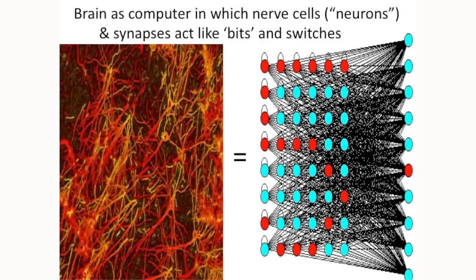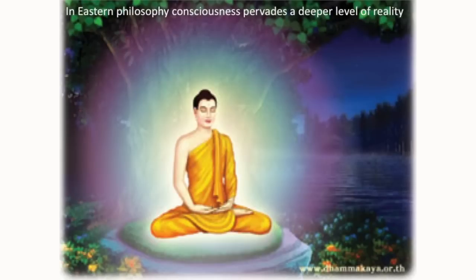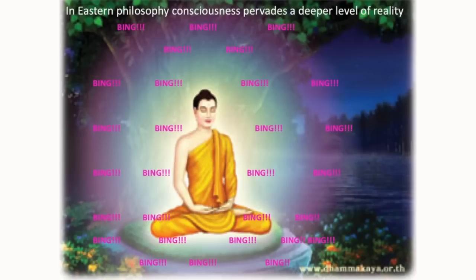Most computer, most people would say, scientists would say that the brain is a computer in which nerve cells, neurons, and synapses act like bits and switches in a computer. However, in Eastern philosophy, consciousness pervades a deeper level of reality. Bing is everywhere.